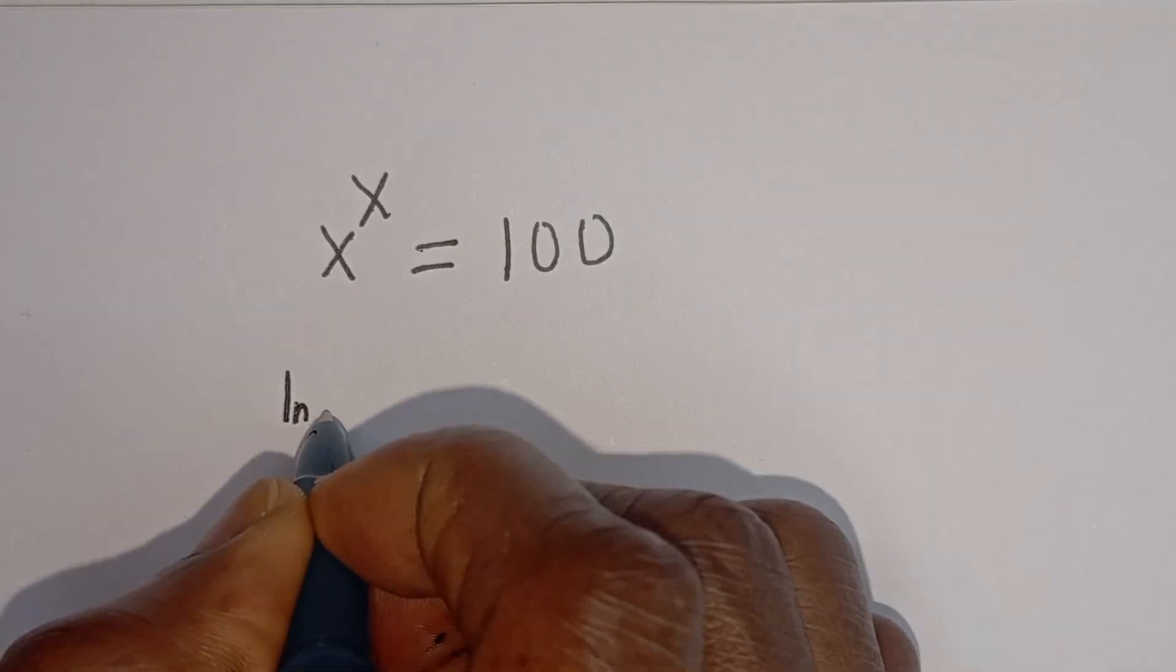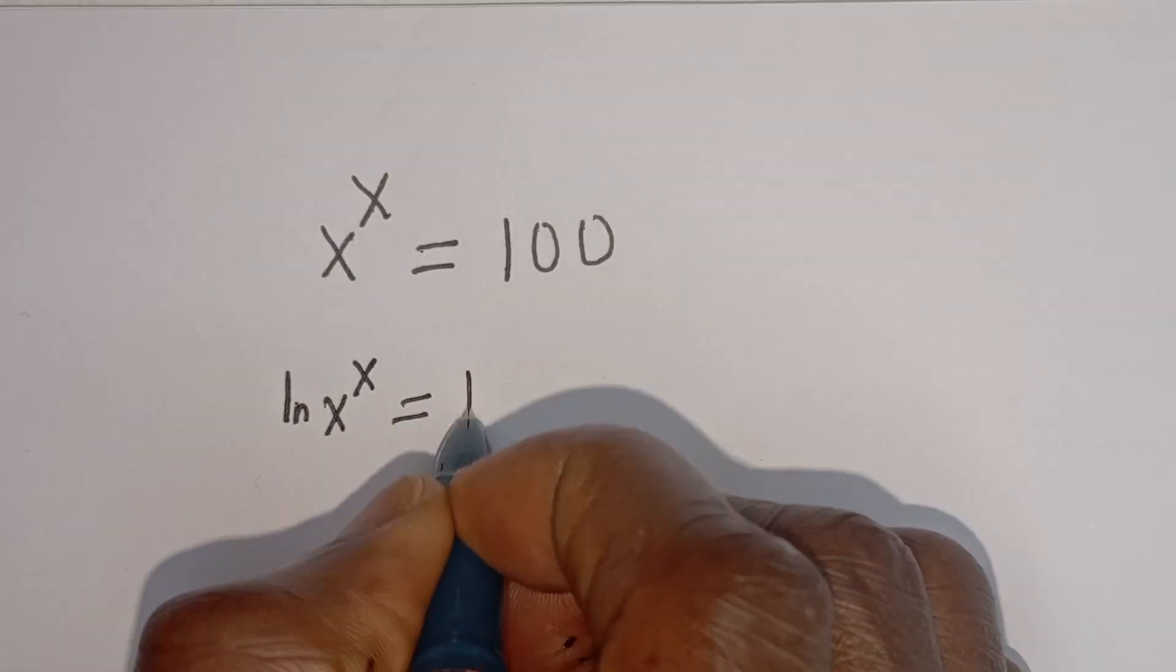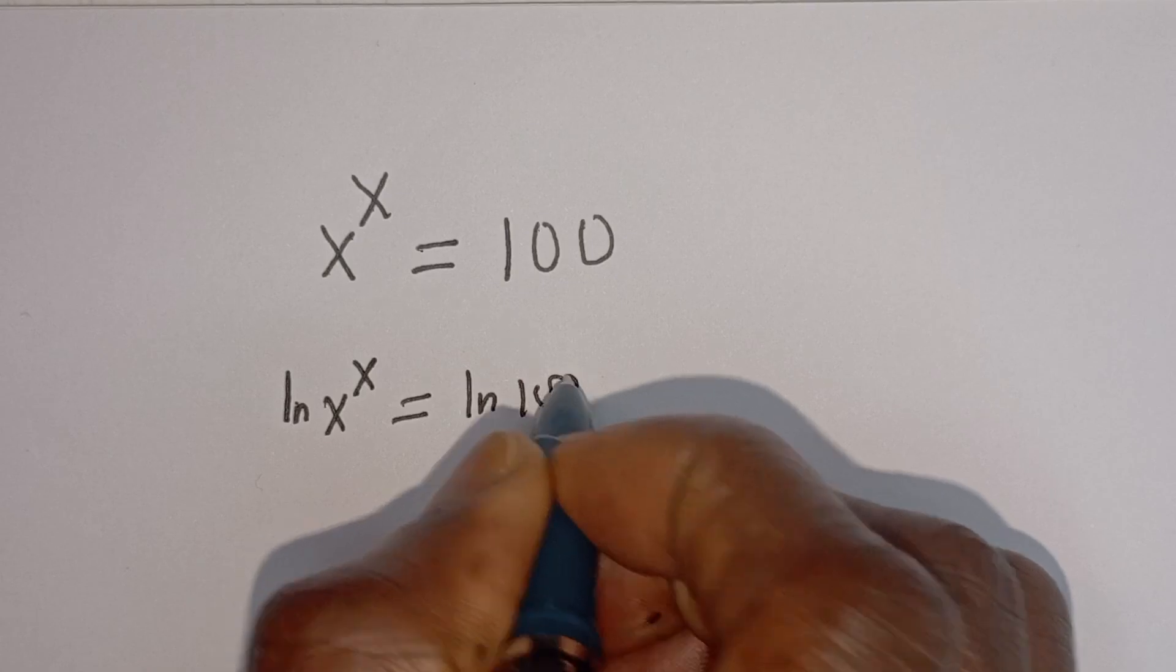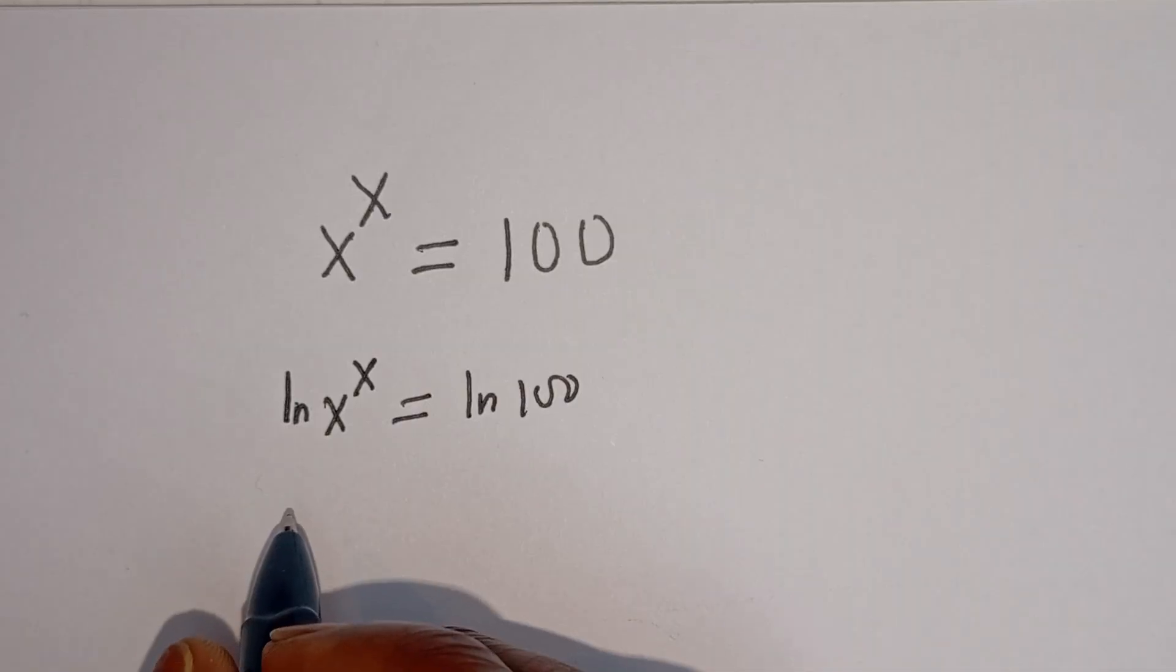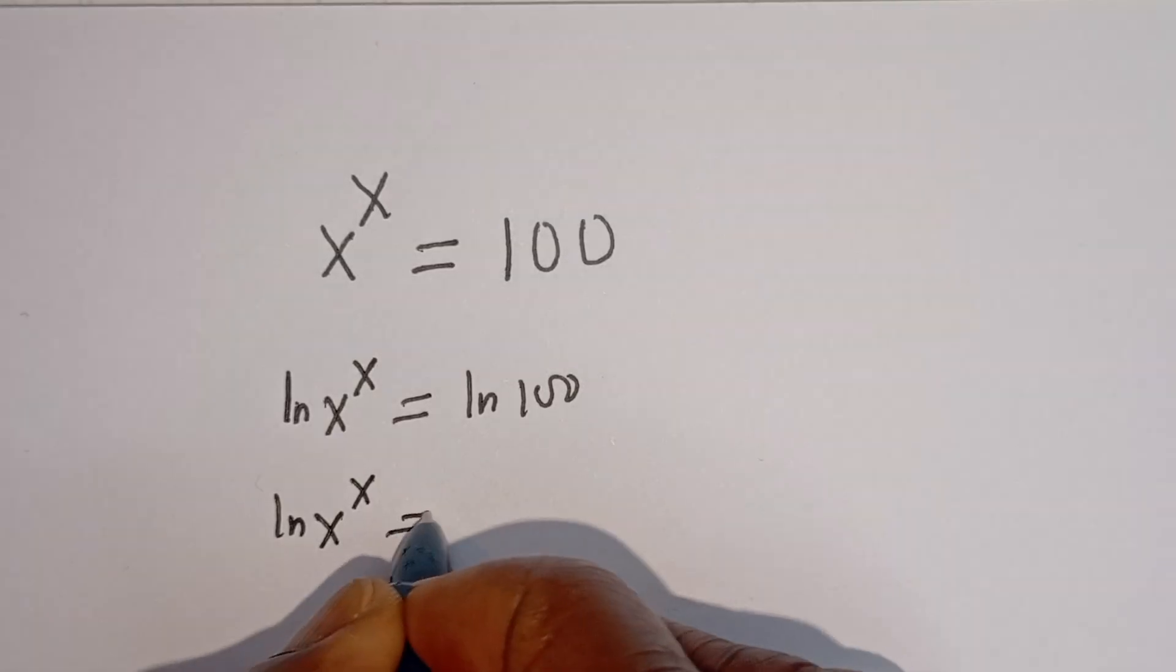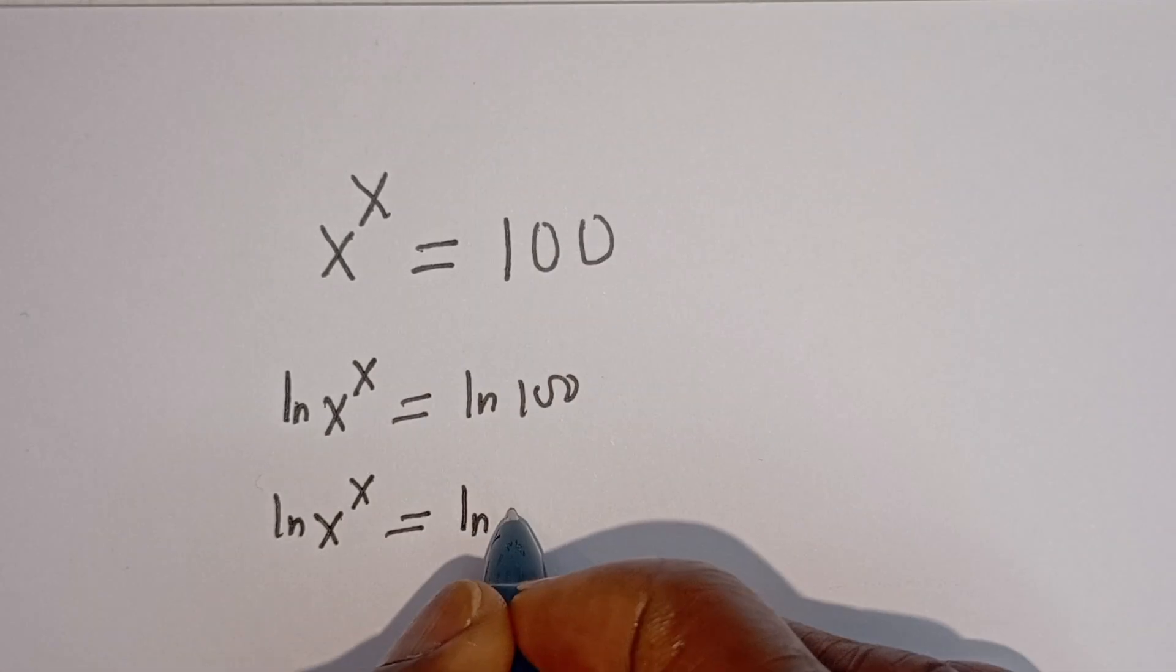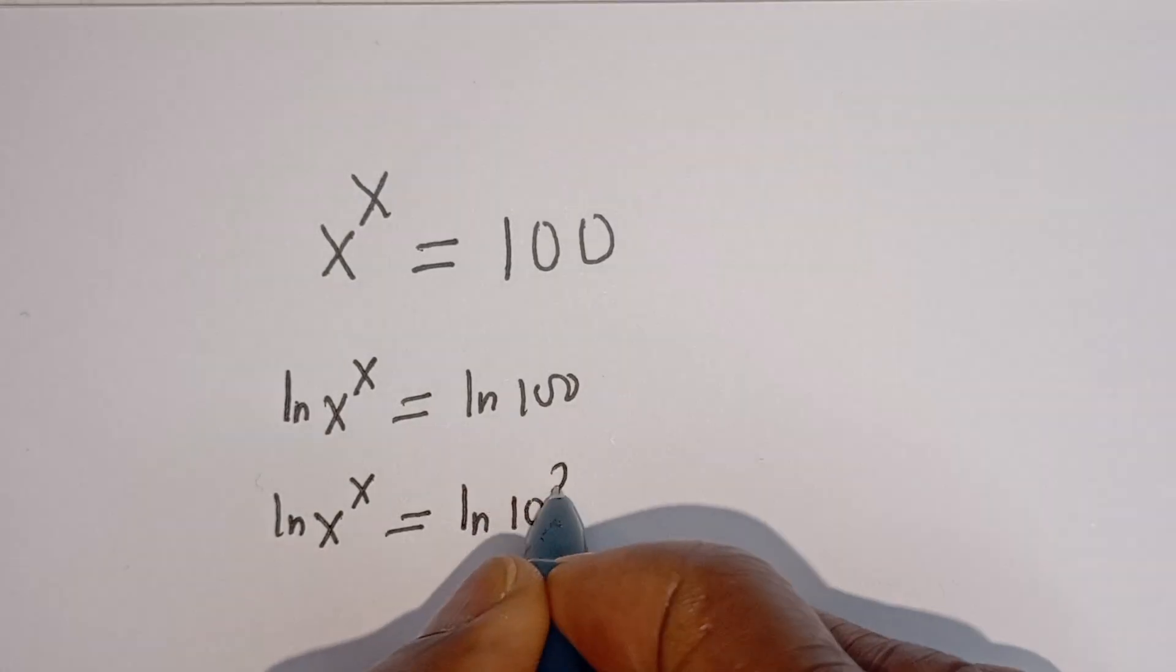Natural log of S to the power of S is equal to natural log of 100. S natural log of S to the power of S is equal to natural log of 100, calculating as 10 squared.